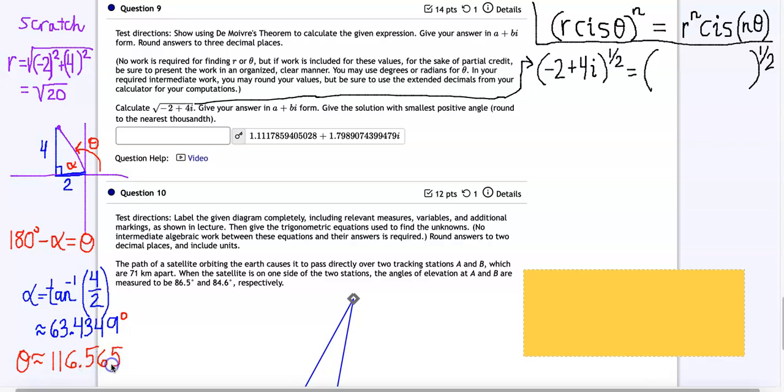You can round in your work that's completely fine. You just want to make sure that you use extended decimals for your calculations which is what I say right here. You may round your values but be sure to use the extended decimals from your calculator for your computations. So now when we rewrite our value here in trig form or polar form we have root 20 cis and then the angle. Now I ran out of space here so I rounded it to five seven. That's completely fine. As I said you can round your values in your work just keep track of the extended decimal in the calculator.